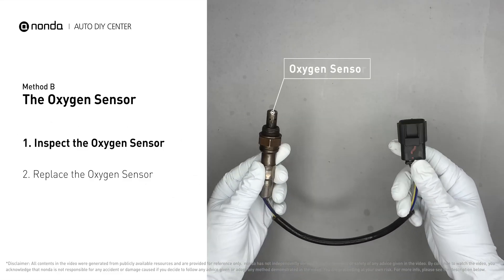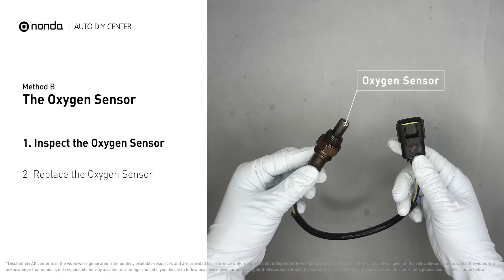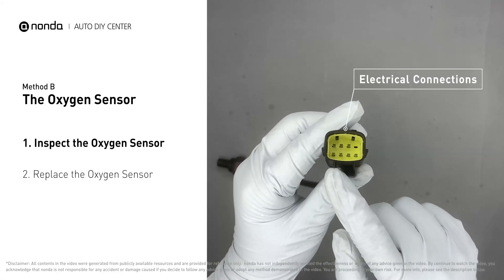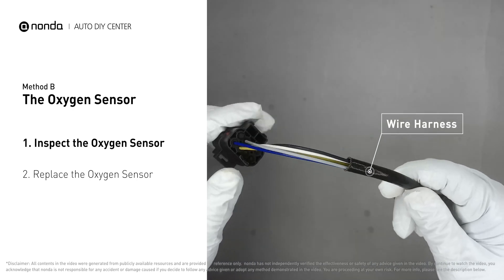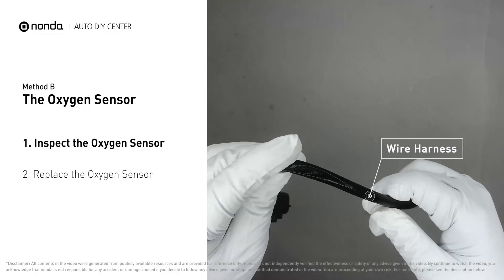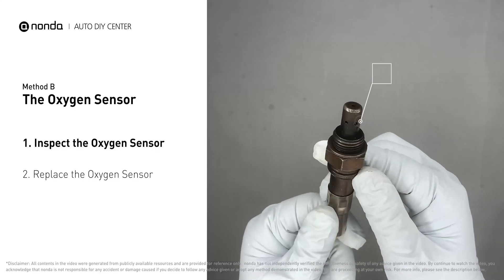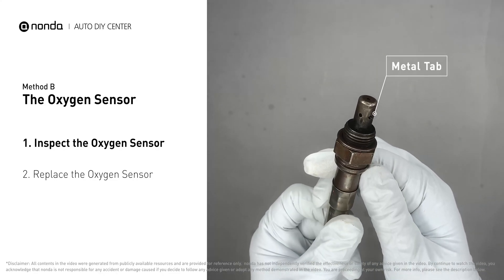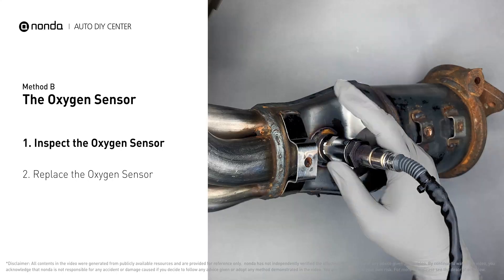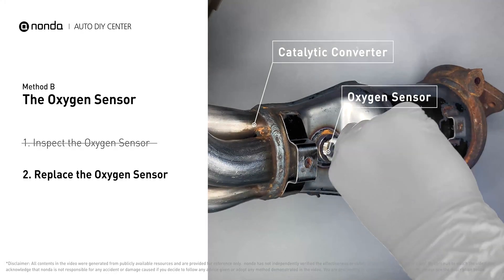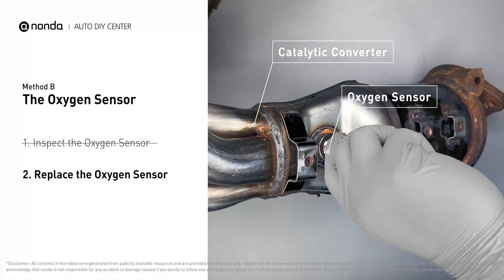Visually check the oxygen sensor's electrical connections, wire harness, and metal tabs for any damage. If damage is found, replace the oxygen sensor.